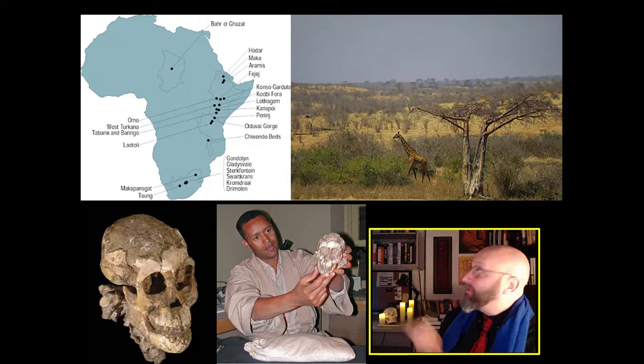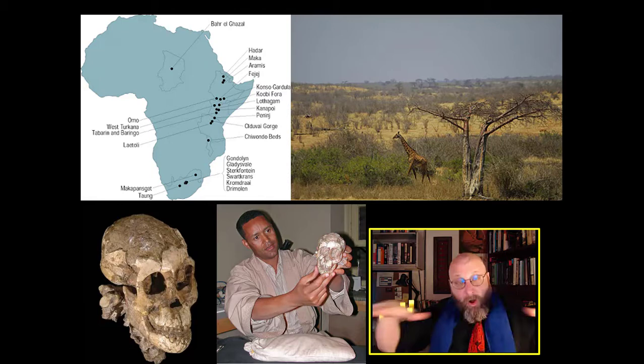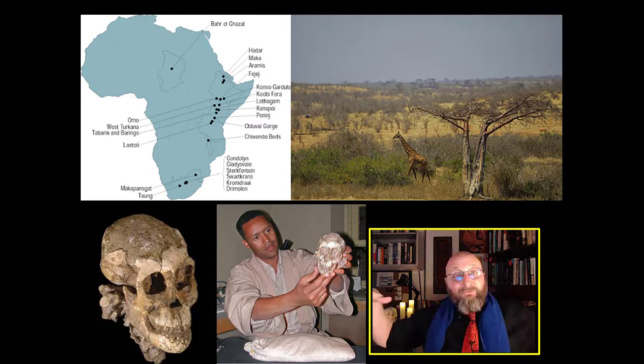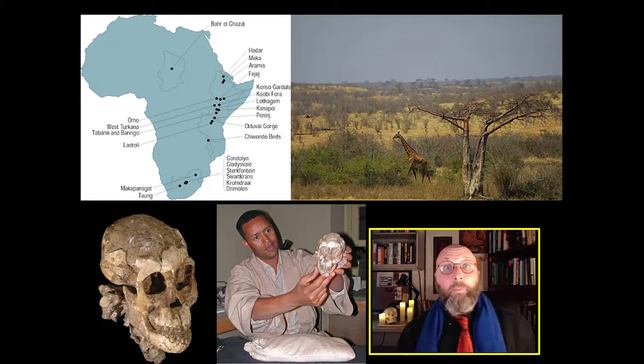What we do know about australopithecines is that their environment is east and southern Africa. If you look at that map on the upper left, all of those black dots are places where they found australopith remains. These guys are all over east and southern Africa, but not really outside it. That terrain is large, flat, open spaces — very hot open spaces — where you've got megafauna and megapredators.